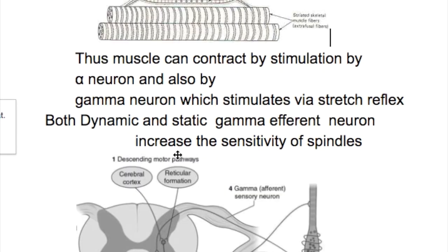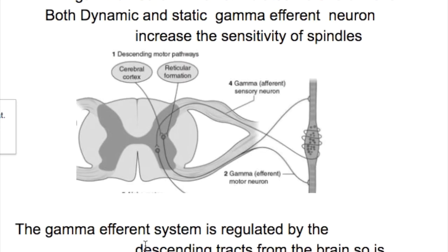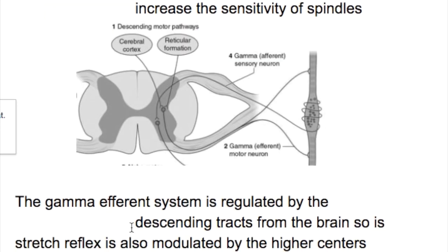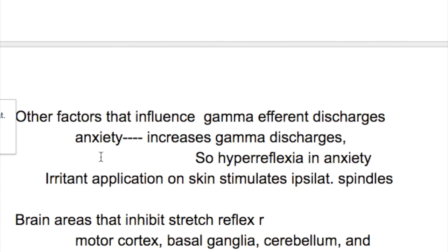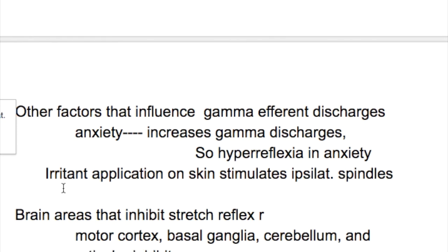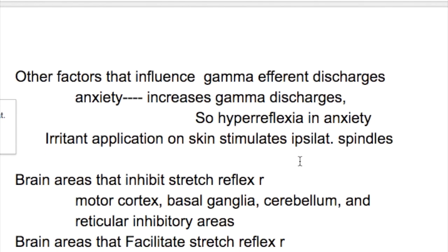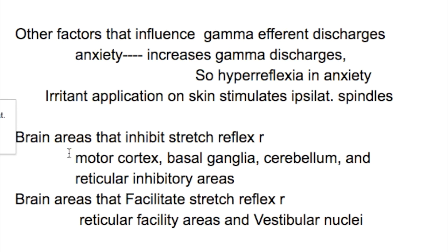Both dynamic and static gamma efferent neurons increase the sensitivity of spindles. The gamma efferent system is regulated by descending tracts from the brain, so the stretch reflex is modulated by higher centers. Anxiety increases gamma discharges, causing hyperreflexia. Irritant application on the skin also stimulates ipsilateral spindles. Brain areas that inhibit the stretch reflex are the motor cortex, pyramidal tract, basal ganglia, cerebellum, and reticular inhibitory areas.